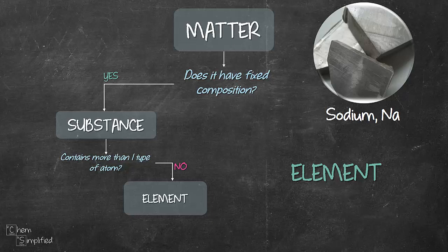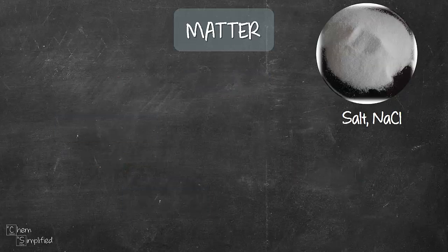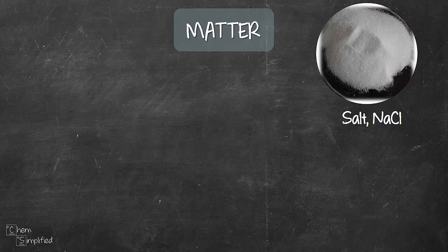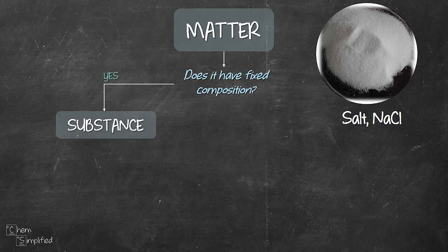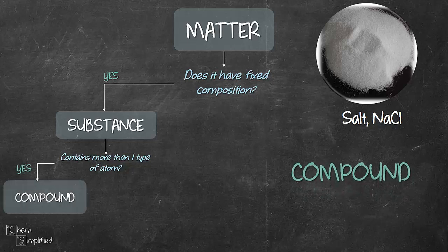Let's move on with our second example. Salt, NaCl. Same question: does it have fixed composition? Yes. We know the chemical formula is NaCl. So it's a substance. And then we ask the next question, which is, does it contain more than one type of atom? Yes, because we have Na and Cl. That's two types of atom. So the answer is yes. So therefore, salt NaCl is a compound.